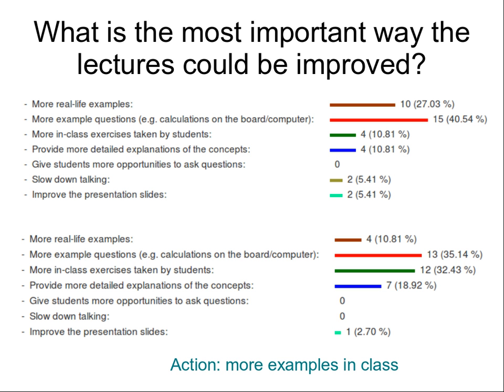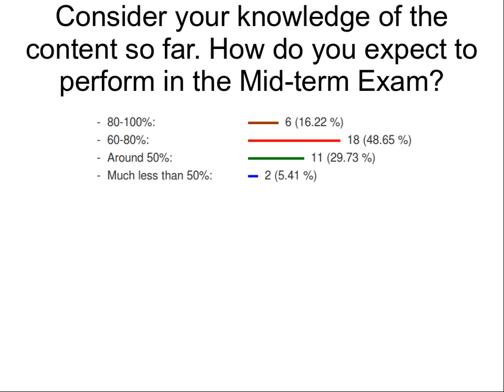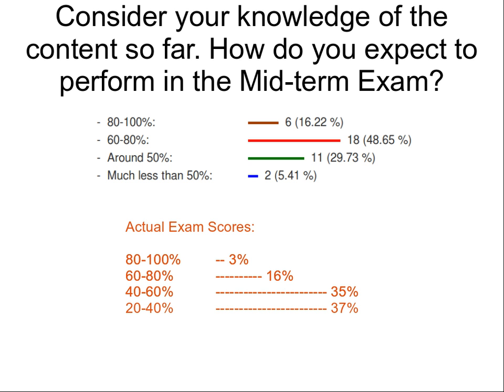How were you going so far? What did you expect to get in the midterm? About half of the students said sixty to eighty percent. What were the actual scores? Three percent got between eighty and one hundred, and about sixteen percent got between sixty and eighty. So people didn't do as well as they expected, which is not unusual. It's a shift down a little bit, but I hope all students can shift that up for the final exam.